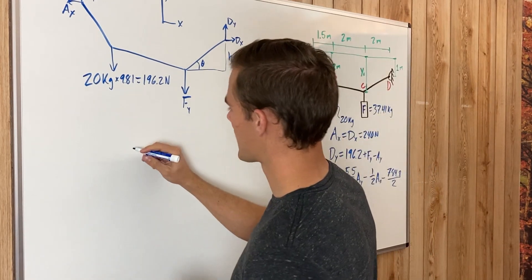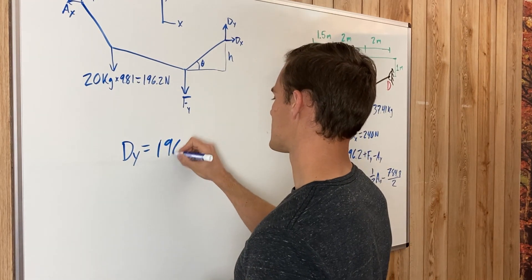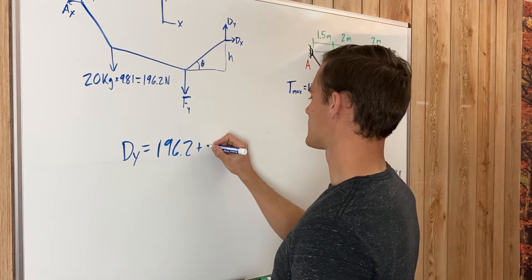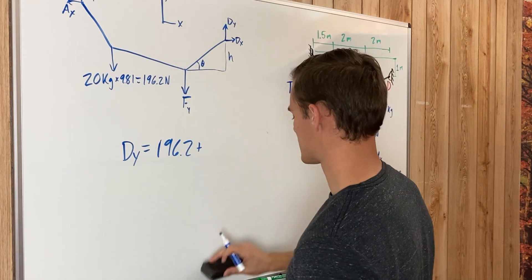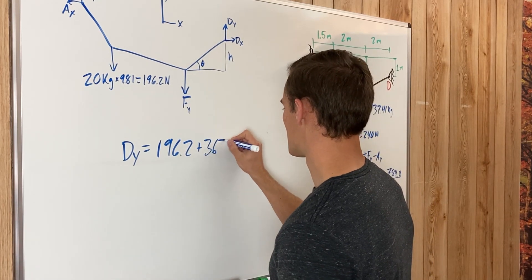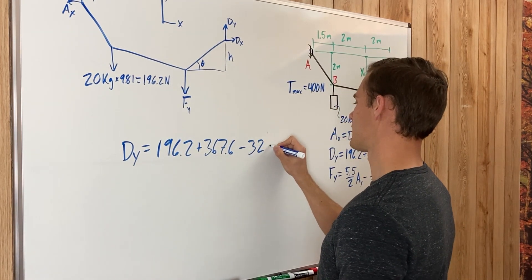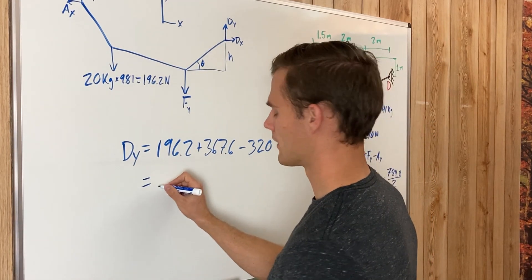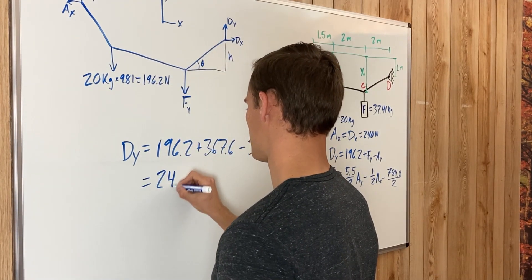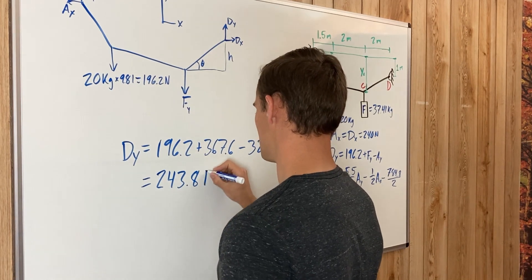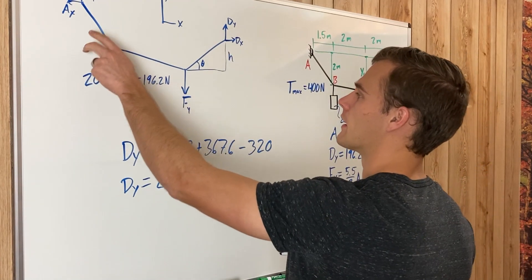We find D sub y using our equilibrium equation: D sub y equals 196.2 plus F sub y (which was 367.6) minus A sub y (which was 320). Solving that gives D sub y equals 243.8 newtons.